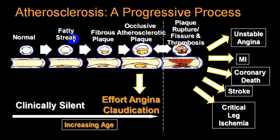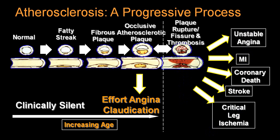In atherosclerosis: initial stage shows a fatty streak, then plaque formation. A stable plaque gives rise to symptoms like angina and claudication. Unstable plaque rupture leads to thrombus formation and occlusion, giving rise to unstable angina or acute MI — together called acute coronary syndrome, which may end in coronary death. When cerebral blood vessels are involved: stroke. When peripheral arteries are involved: critical limb ischemia.